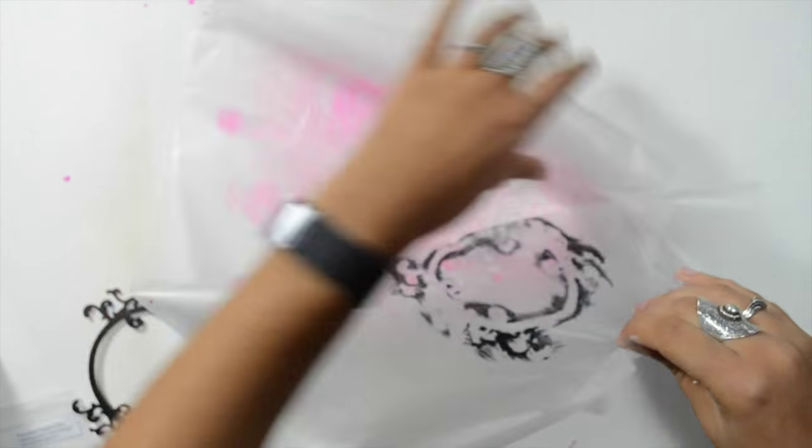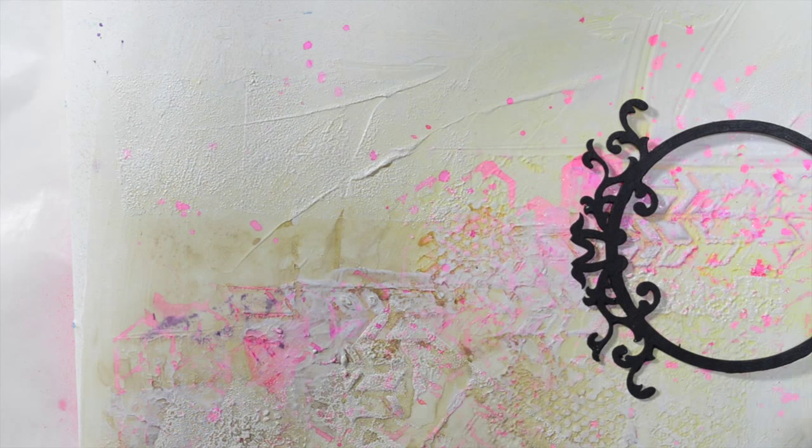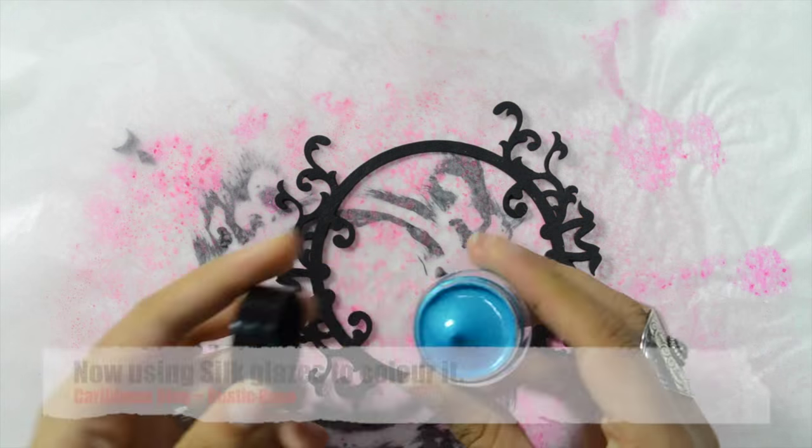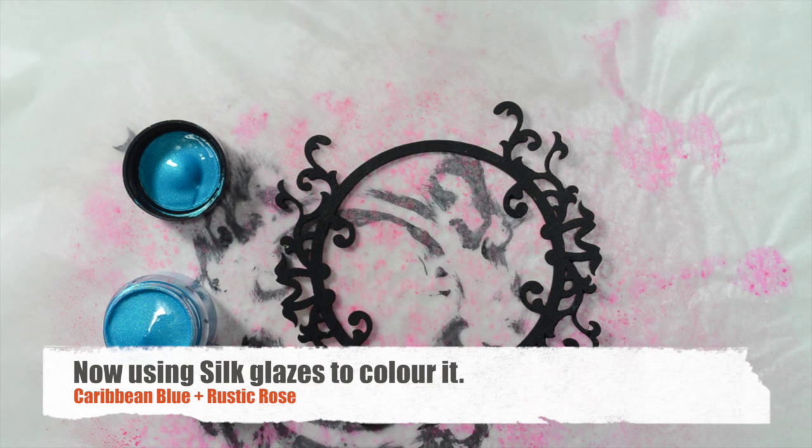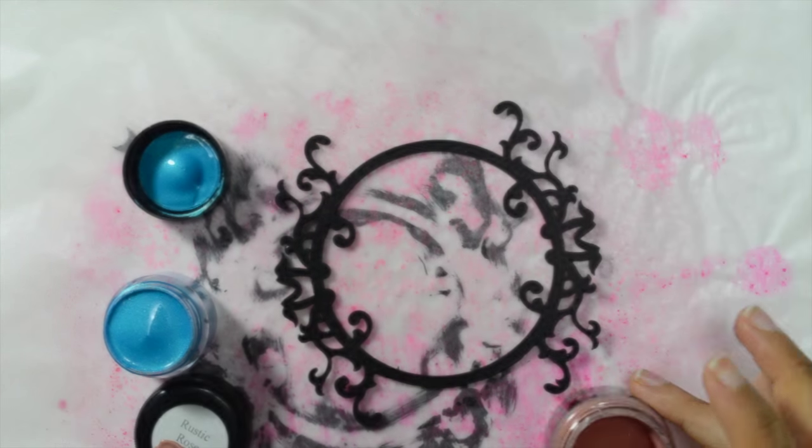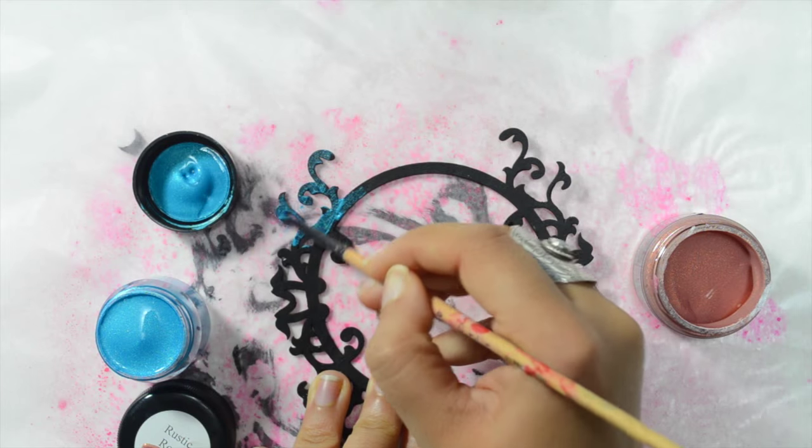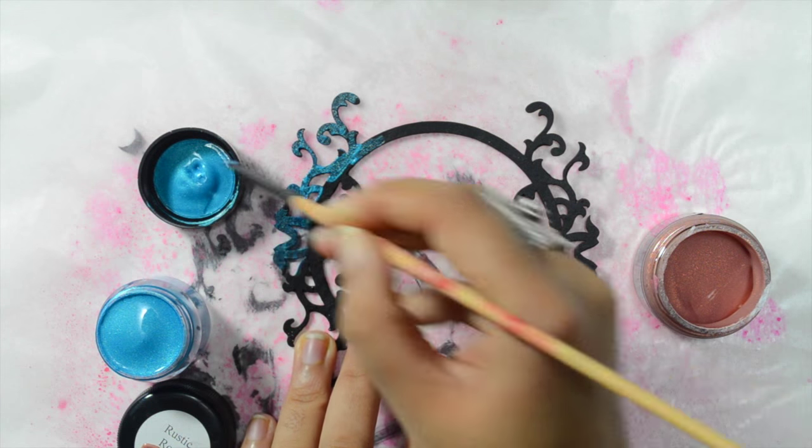Now that it's dry, completely dry, I will use some Silks. If you're not familiar with it, it's acrylic paint but it's a glaze, meaning it's semi-translucent, but the intensity of the color is just amazing. I just love this paint.